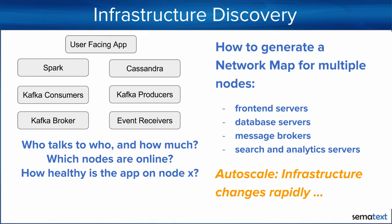The example application stack you see over here on the left would look much more complicated if you were to expand all the nodes and communication between the services. But when you're troubleshooting, you need a way to discover where your services are. So we're going to show you how to generate ad hoc network maps, which reflect the actual network communication between servers, containers, and applications.